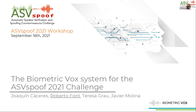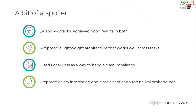I will present the systems that we have developed by MetriBox for the ASVspoof challenge. I would like to start by doing a bit of a spoiler and highlighting what were our main findings, so that you know what to expect from the talk. We work on the logical access and the physical access tracks. Our first finding is we found a lightweight neural network architecture with a very small number of parameters that works well for both of the tasks, LA and PA.